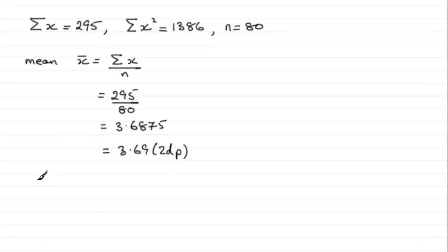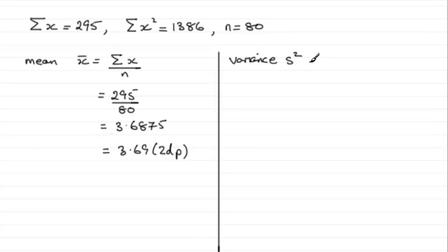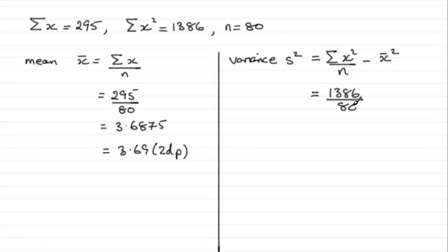Now we've got to work out the variance. The variance, s-squared, is equal to the sum of x-squared over n, minus x-bar all squared. So we've just got to put our values in: we've got 1386 for sigma x-squared, divided by n which is 80, minus the mean squared. Don't use the rounded value — use the unrounded one, so that's 3.6875 squared. Work that out and you end up with 3.7273...